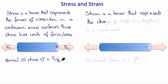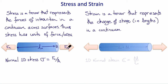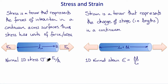Strain is a tensor that represents the change of shape, i.e. lengths, in a continuum. So if our sample had an original length of L0 and, as a result of the application of the forces, stretched to a new length L0 plus ΔL, then the 1D normal strain in this tensile example, ε, equals ΔL over L0. So stress is force per unit area; strain is length change.